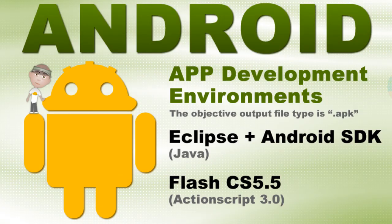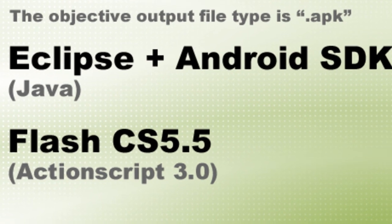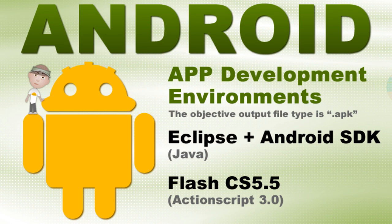Now let's move along to discussing Android app current development environments. No matter what development environment you decide to use, the objective output file type is an APK file — .APK. So when our application is finished being created, we have to render it out as a .APK file using certain development tools. What I'll focus on in this handbook is Eclipse and Flash CS 5.5, which Flash CS 5.5 is now available as a trial download or you can buy the software directly. Eclipse is a free open source tool.